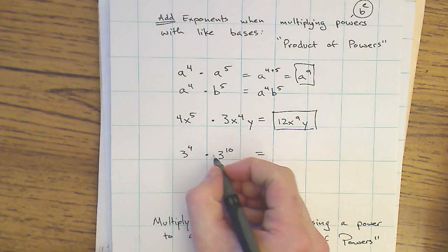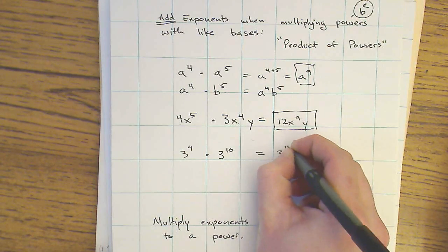And finally, 3 to the 4th times 3 to the 10th is 3 to the 14th.